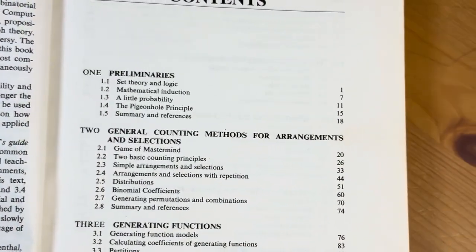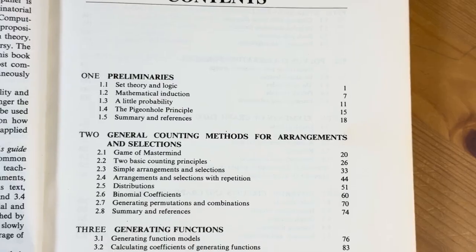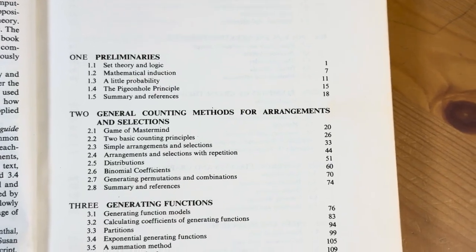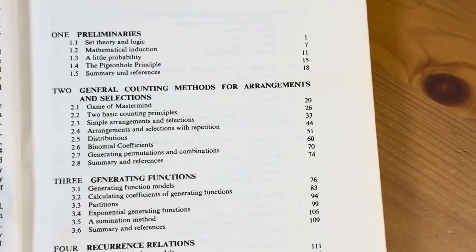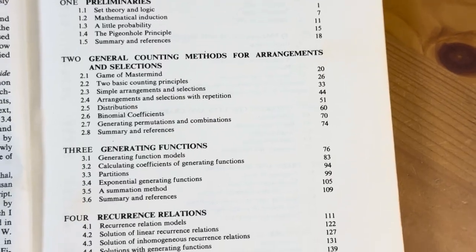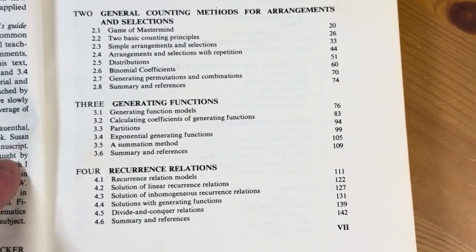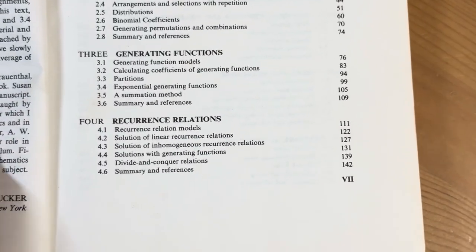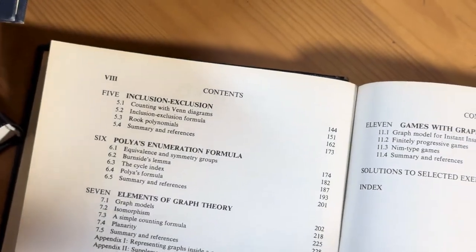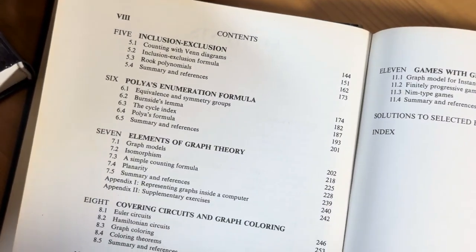Here are the contents. So you can see what it contains - set theory and basic stuff. Counting methods for arrangements and selections. Generating functions. Recurrence relations. Inclusion-exclusion. Polya's enumeration formula.